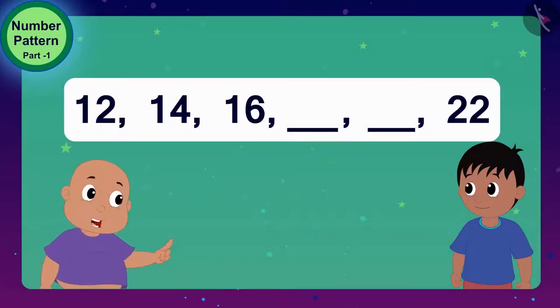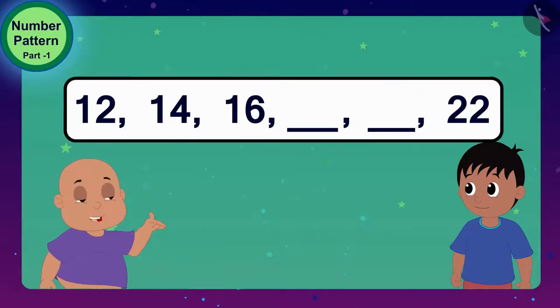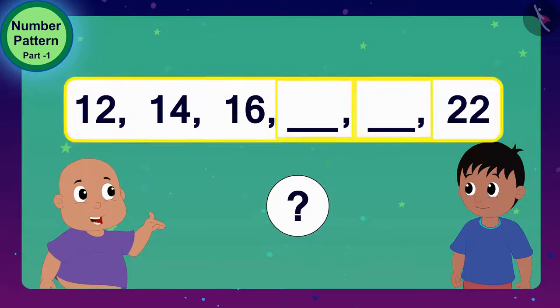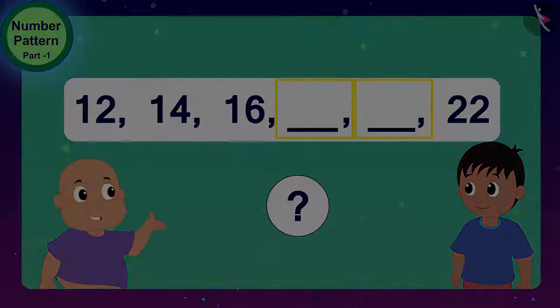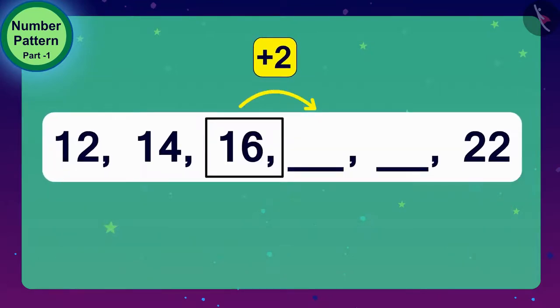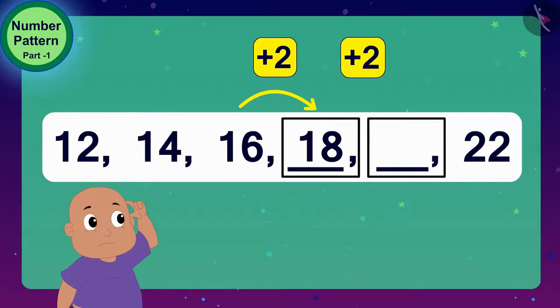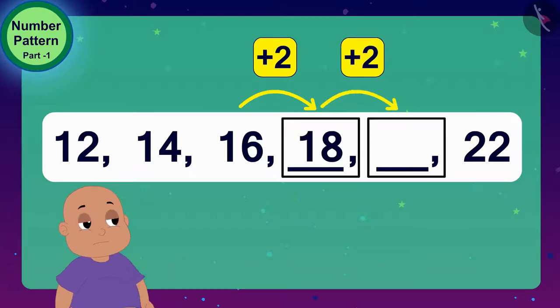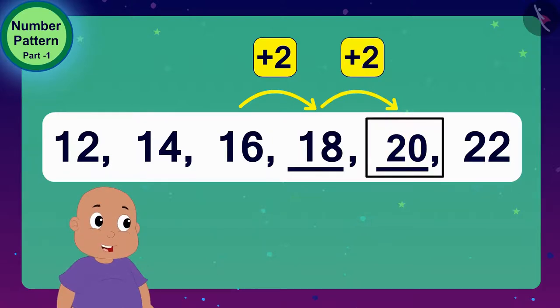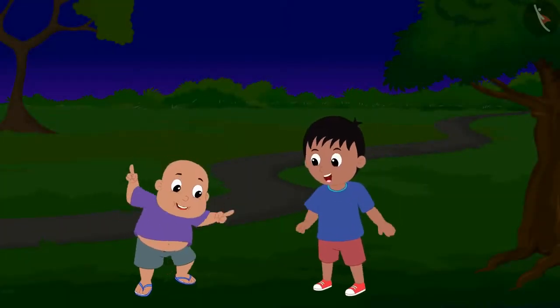Hey, wow, Raju. This number pattern is so interesting. So, what do we have to do to get the next number in this number pattern? We have to add 2 to 16. Then, 2 added to 16 is 18. Bablu, now can you tell what will be the next number? Hmm, add 2 to 18 and you get 20. Raju, we have solved the first riddle. Both Raju and Bablu started dancing.